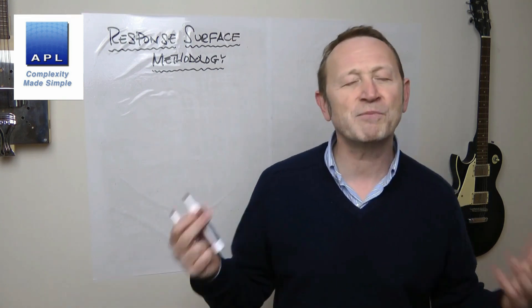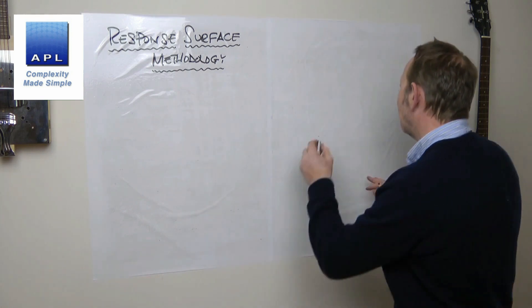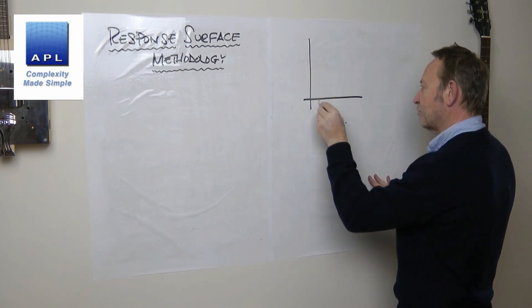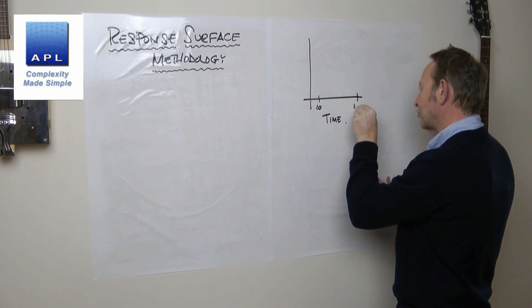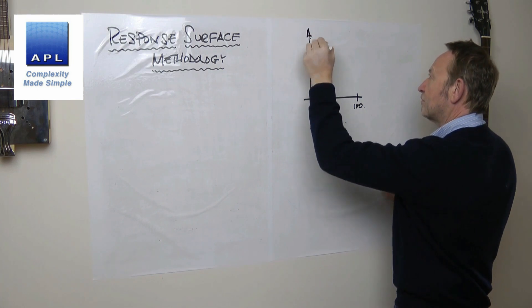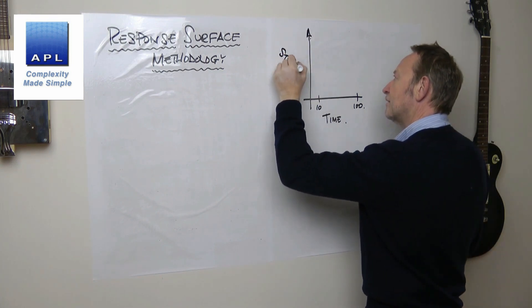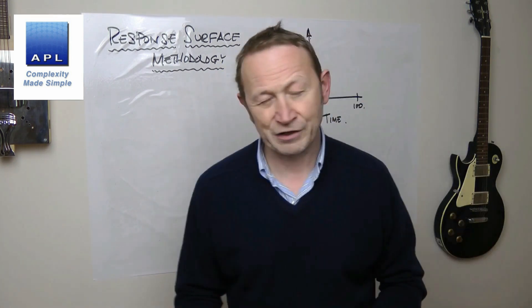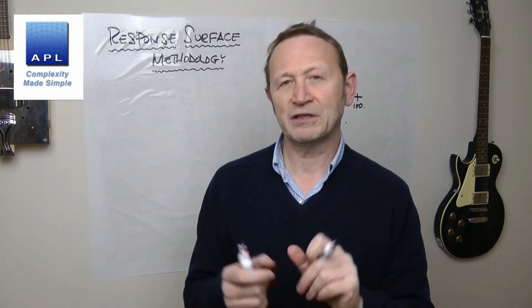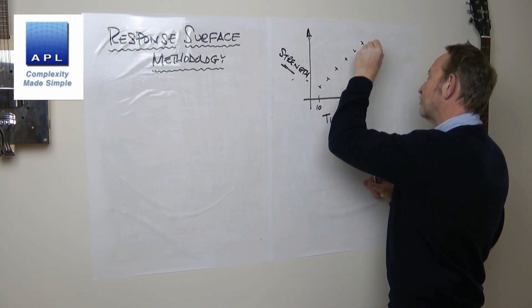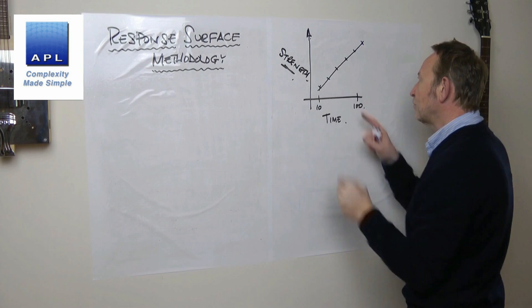So let's talk about what a response surface is. Normally when we think about understanding a process, let's say we're going to understand what time does — going from 10 seconds up to 100 seconds. We're going to see what the effect is on the strength of a moulded part — this could be cooling time. We would test in different places and we would get this response.